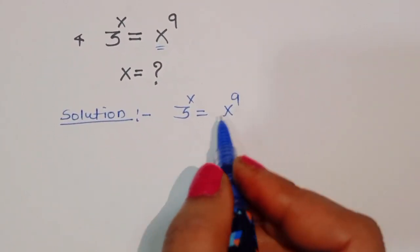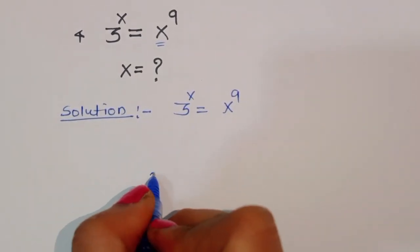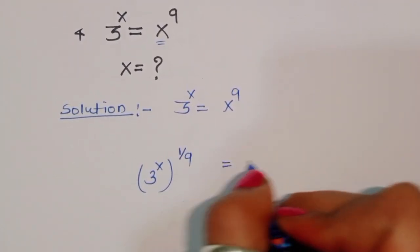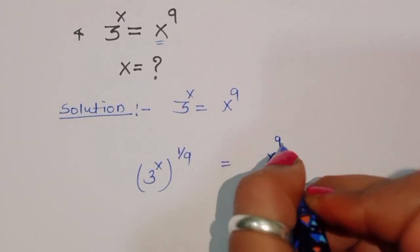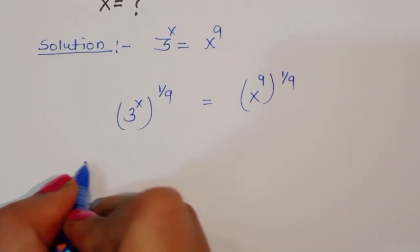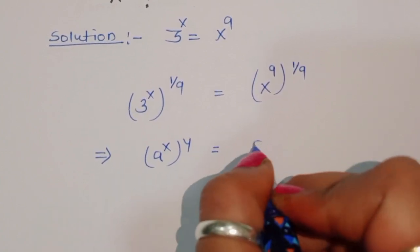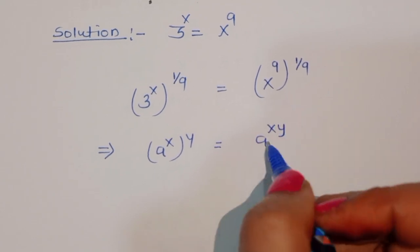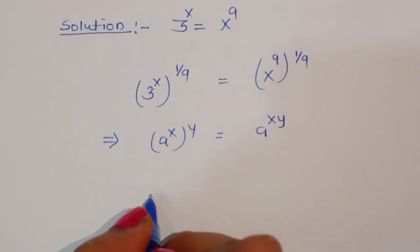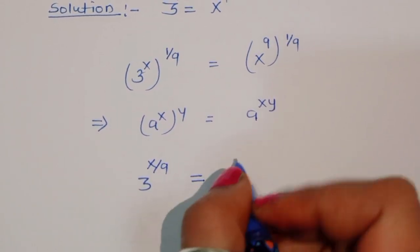We can raise both sides to the power 1/9. So we take 3 power x, raised to power 1/9, equal to x power 9, raised to power 1/9. We know the formula: a power x power y is equal to a power xy. Using this formula, we can write 3 power x by 9.